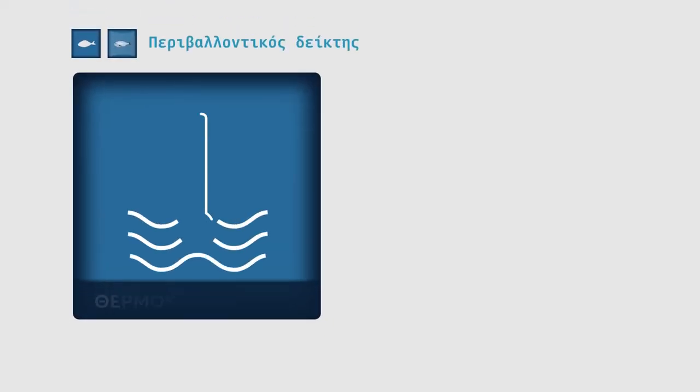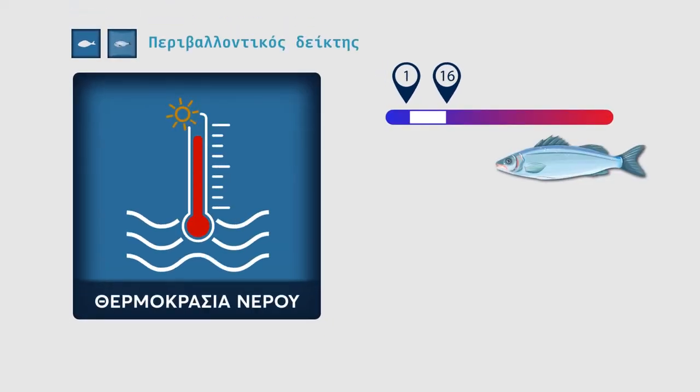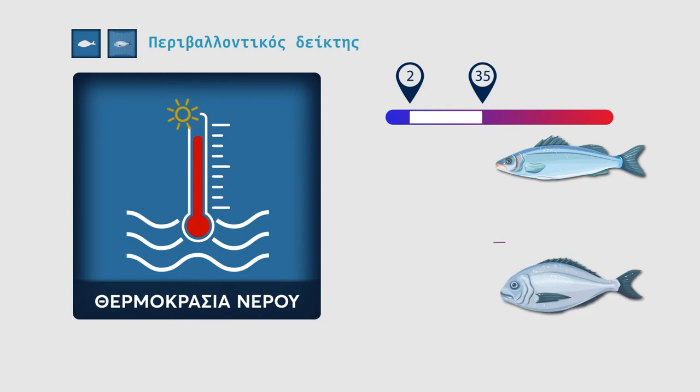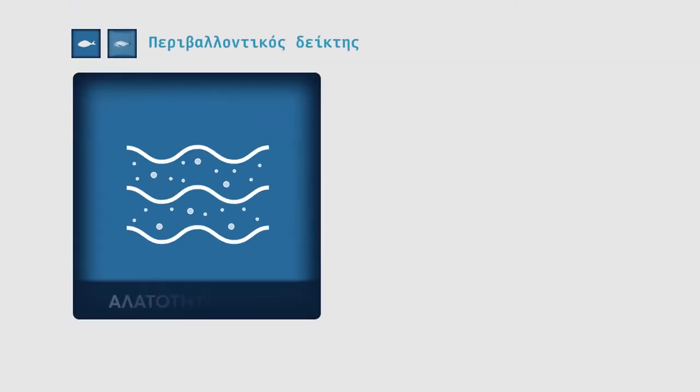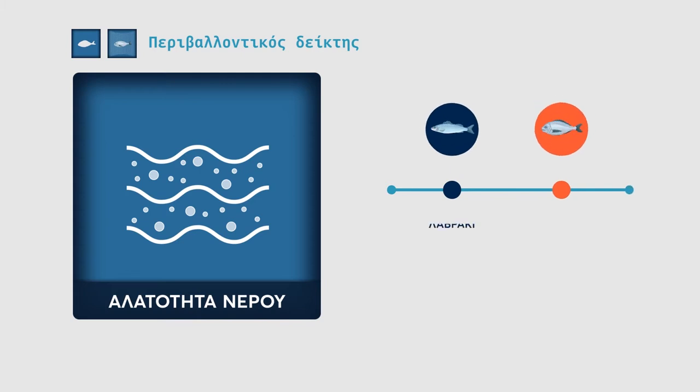As ectothermic organisms, fish are strongly affected by the temperature of the water. Each species presents a breadth of temperatures in which it survives. Sudden and sharp changes in salinity can result in reduced well-being and even mortality.